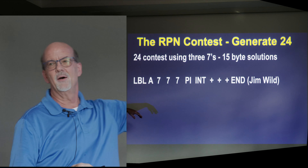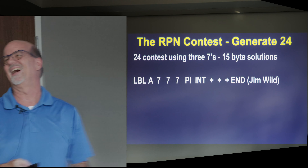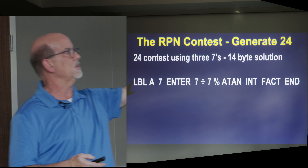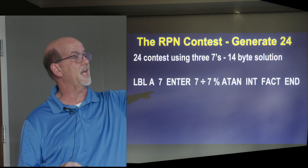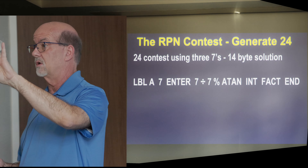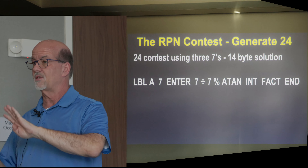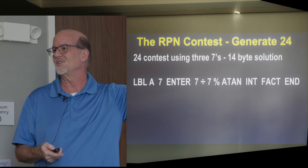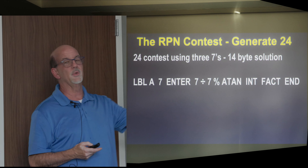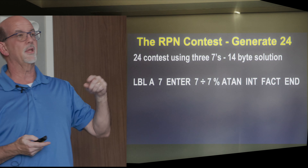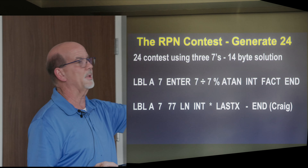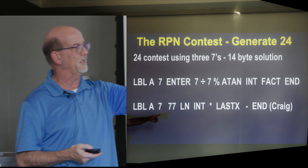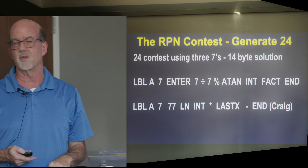Now 14-byte solutions — we're getting closer. Label A, 7 enter, 7 divide, 7%, inverse tangent, integer, factorial. One way to do this is you get to a 4 and do factorial — that's a fairly common approach, because that's a way to go from a 4, which you might be able to generate, to 24. 7% and inverse tangent — I just laugh at those things because that is so bizarre. This is Craig's: 7 enter, 77, natural log, integer, times, last X, minus, end — and that generates 24.